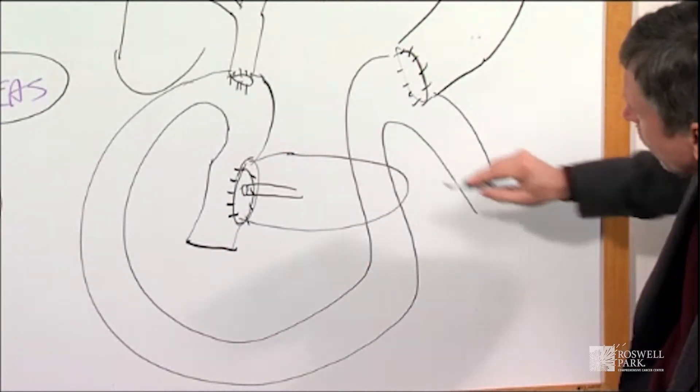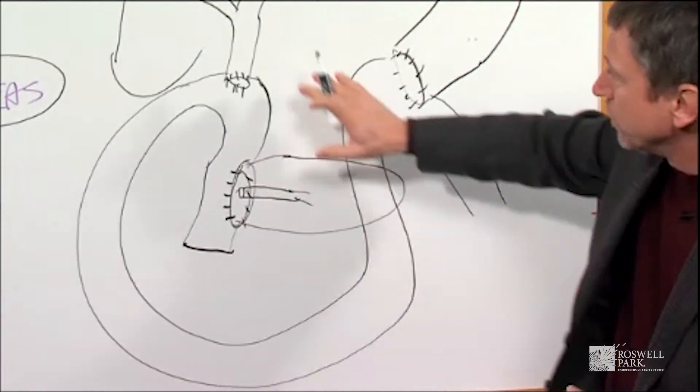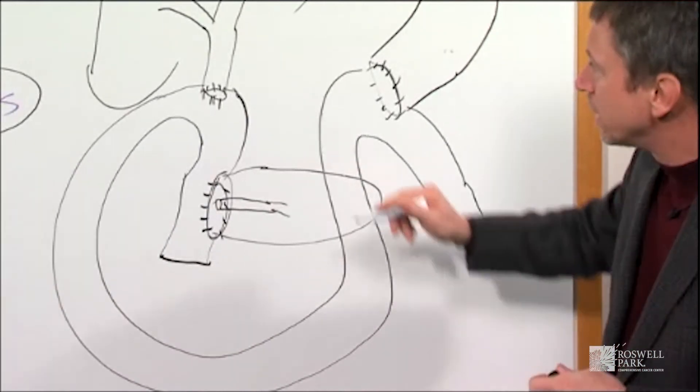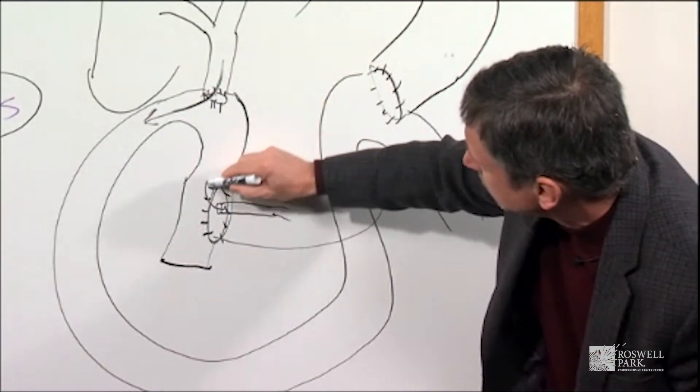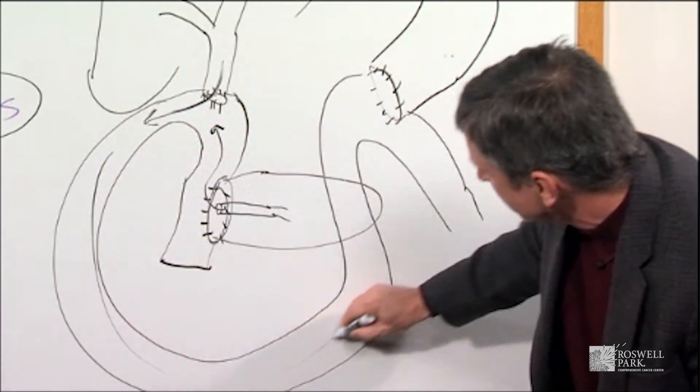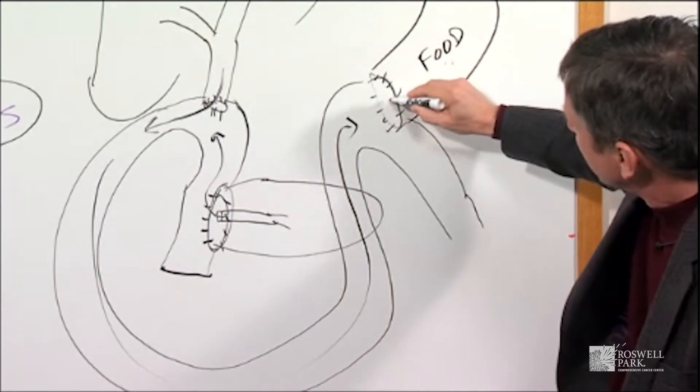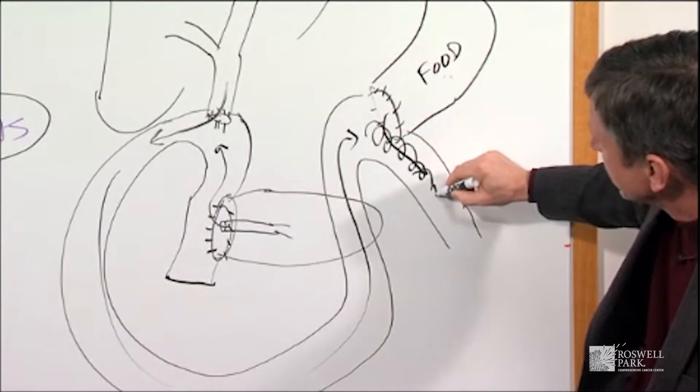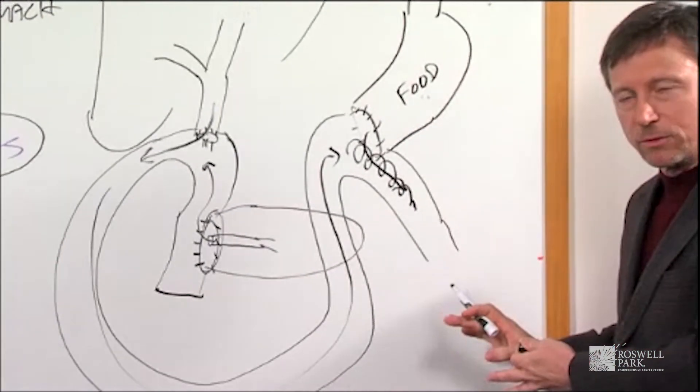So what you'll see here is that the pancreatic juice which helps you digest your food, as well as the bile juice which helps you digest fatty foods, these juices are going to go into the intestine. Then they're going to come around here and the food is going to be in the stomach that's going to come here, and the digestive juices and the food are going to mix together so digestion will occur normally after this point.